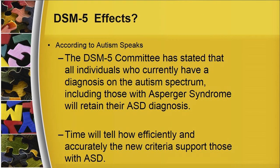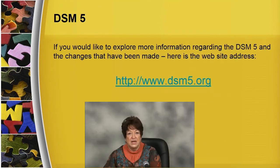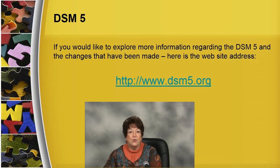So you might be asking yourself, what does all this mean? Well, according to Autism Speaks, the DSM-5 committee has indicated that all individuals who currently have a diagnosis on the autism spectrum, including those with Asperger syndrome, will retain their ASD medical diagnosis. As in most changes, time is going to tell how efficient and accurate the new criteria support those with autism spectrum disorder. If you would like to explore more information regarding the DSM-5 and the changes that have been made, here's the website address.